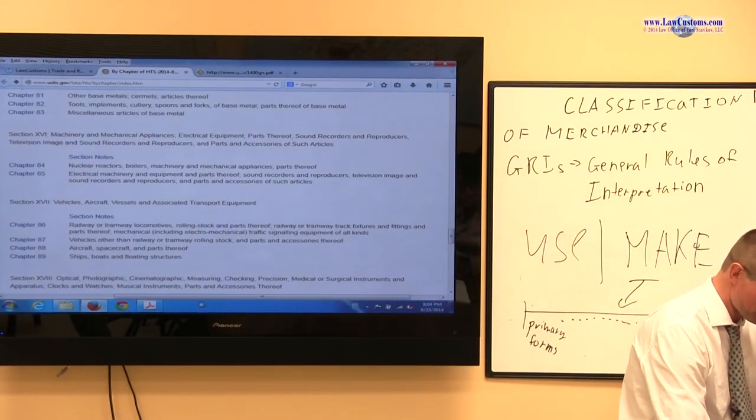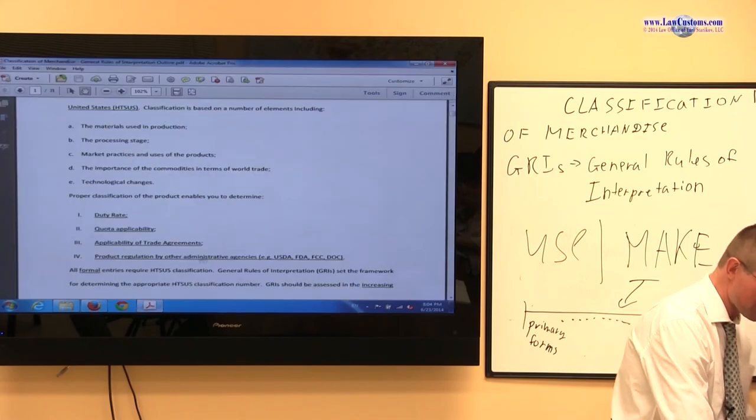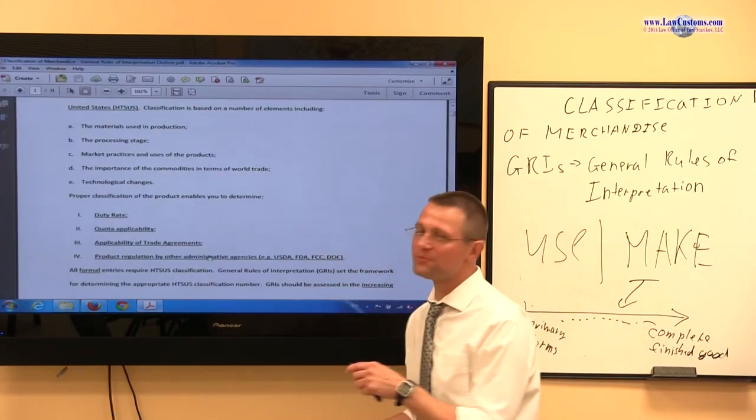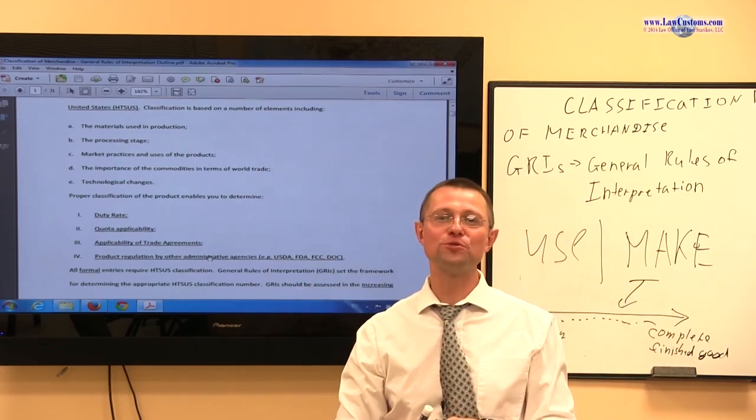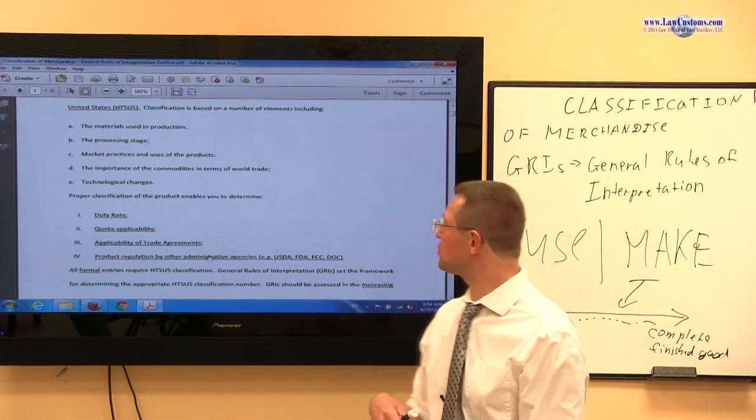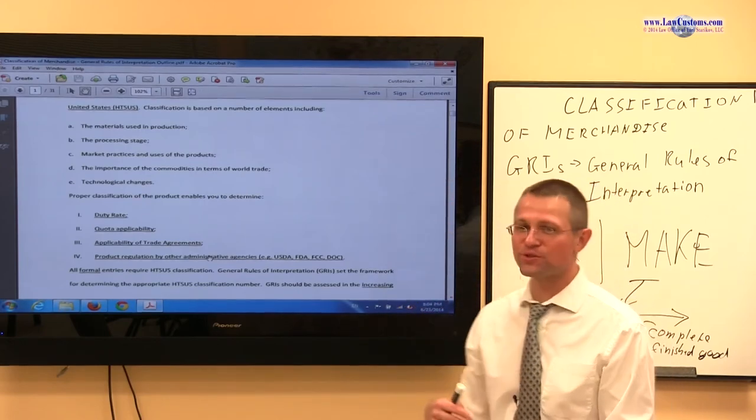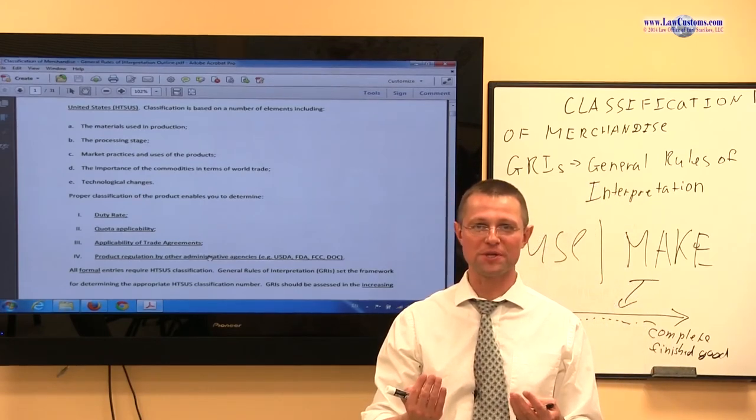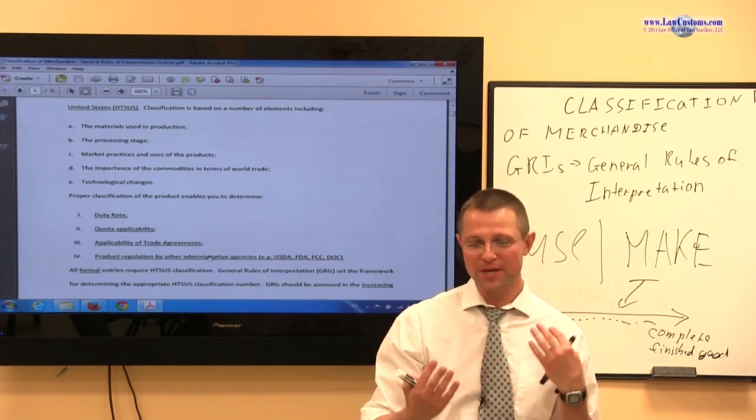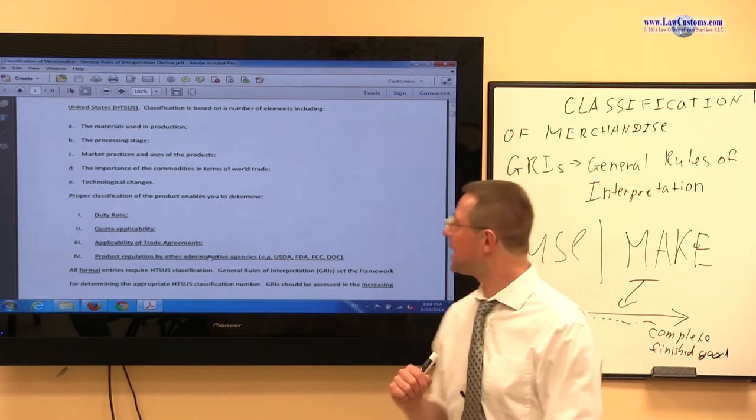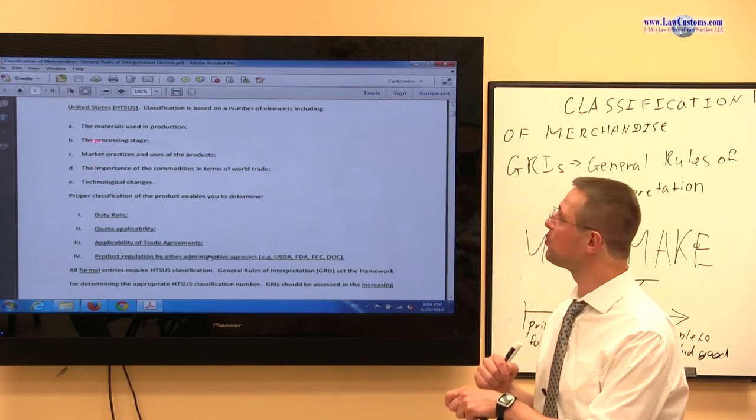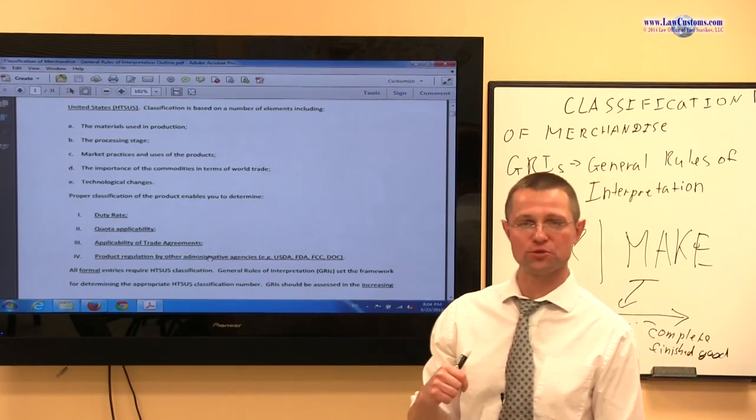So this is what I like to call the totality of circumstances list. These are the factors that shape the HTS US. We really need to know this because it provides a backing of approaching the HTS. Because one factor may be more important than the other depending on the situation.